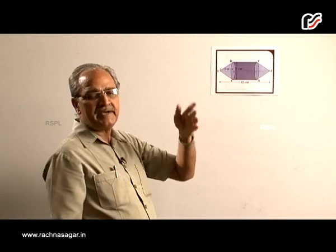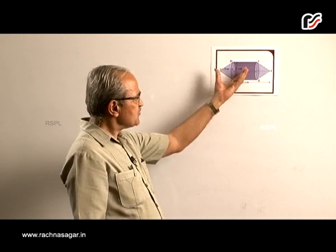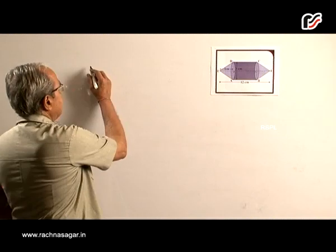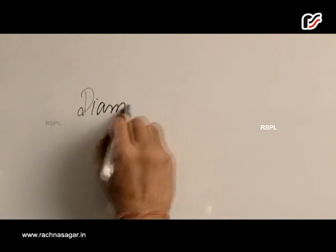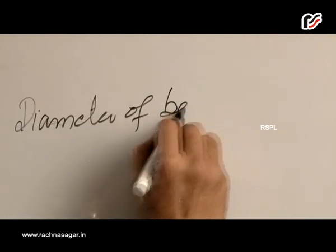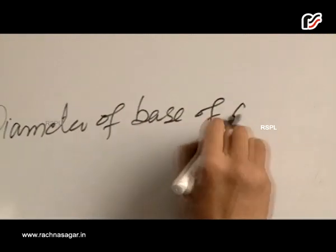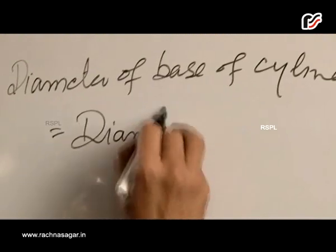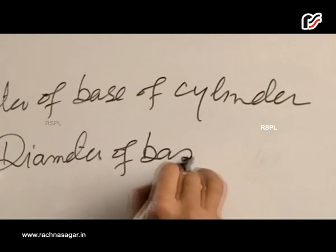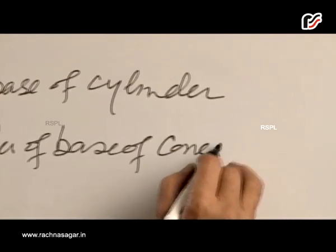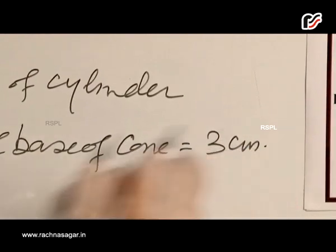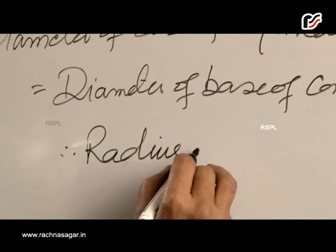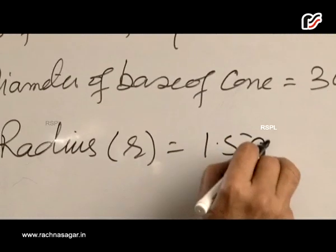To find volume, we require radius, we require height. So let us first find out all these things. We write that diameter of base of cylinder equals diameter of base of cone equals 3 cm. Therefore, radius is 1.5 cm. Therefore, r equals 1.5 cm.